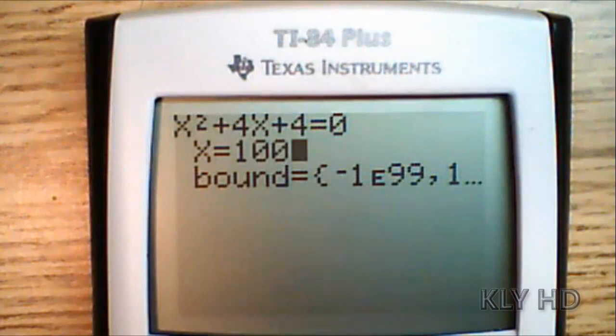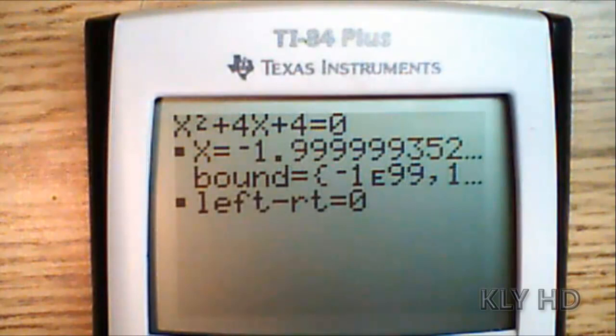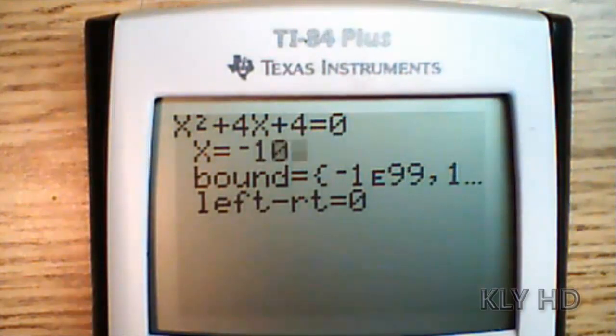In the x field, put a randomly high number. I'm using 100. Then you press Alpha, Enter to solve. This will give you the value for x.